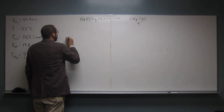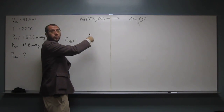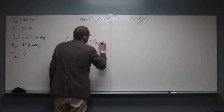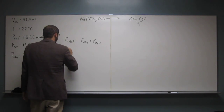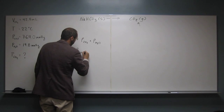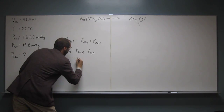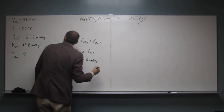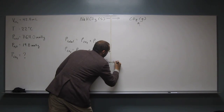Dalton's Law says the total pressure equals the sum of the partial pressures. So we've got the partial pressure of carbon dioxide plus the partial pressure of water equals the total pressure. We rearrange this formula: the partial pressure of carbon dioxide equals the total pressure minus the partial pressure of water. So that's 764.0 mmHg minus 19.8 mmHg.